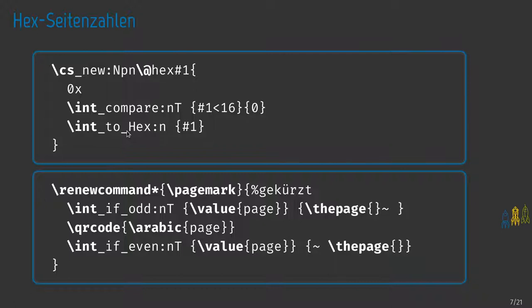The second aspect was to keep layout changes independent from the base structure. As an example, this is how the page number is inserted: we have a block for the page number that includes the QR code and the hexadecimal page number. On odd pages, the page number is on the inside and the QR code follows. On even pages, the page number follows the QR code. That matches the booklet printing scheme — you always want the page number on the outside.